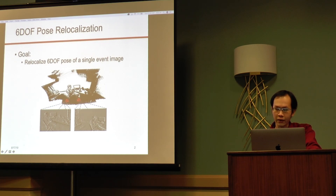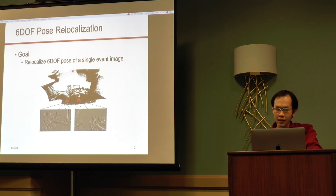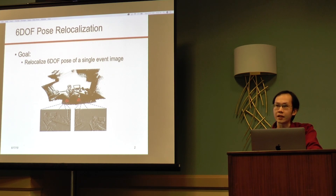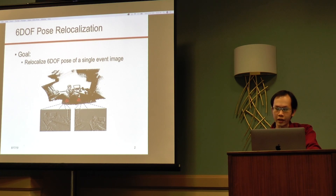Our Spatial LSTM Network is composed of a CNN to learn features from the event imagery, and a stack of LSTMs to learn spatial dependencies in the image feature space. We also show that spatial dependencies play an important role in the relocalization task with the event imagery and the Spatial LSTM.